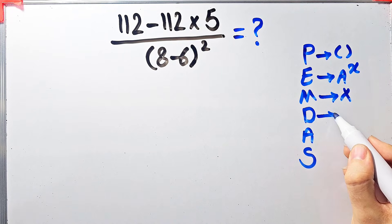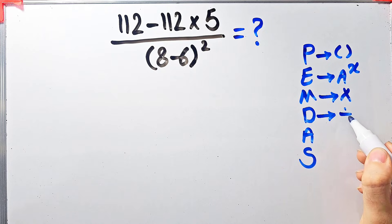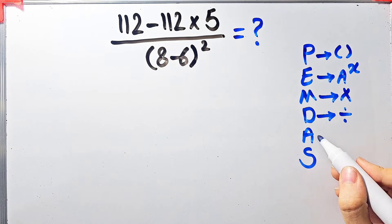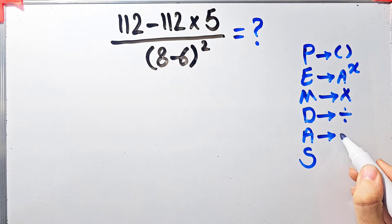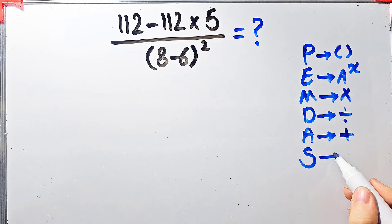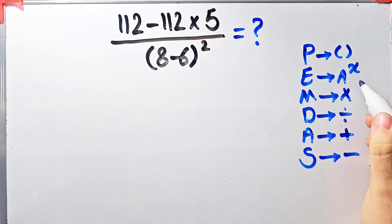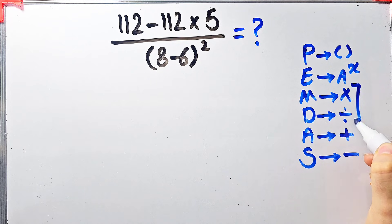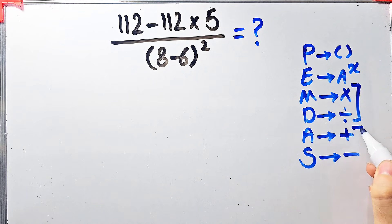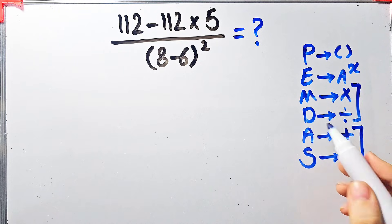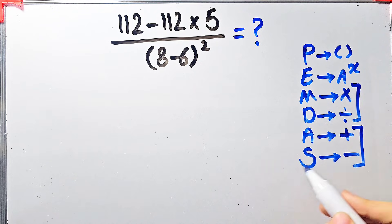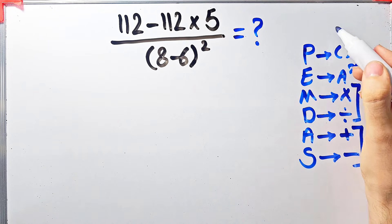D stands for division, A stands for addition, and S stands for subtraction. Multiplication and division have the same level of priority. Addition and subtraction also have the same level of priority. When we have both in an expression, we start from the left and simplify.